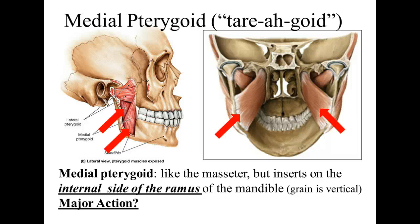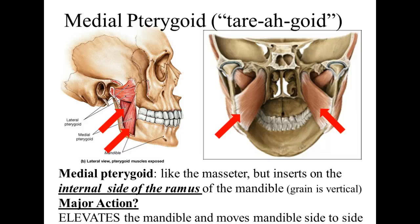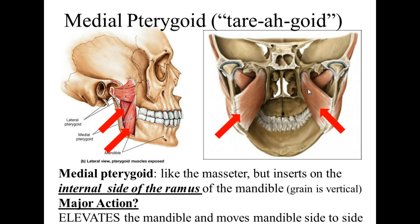So can you guess what this muscle does? The medial pterygoid is kind of like the masseter but inserts on the internal surface of the ramus, and the grain is vertical. So its major action is to elevate the mandible. When you use them independently in a coordinated way, you can actually move your mandible side to side. So the medial pterygoids help us move our mandible side to side and also elevate.